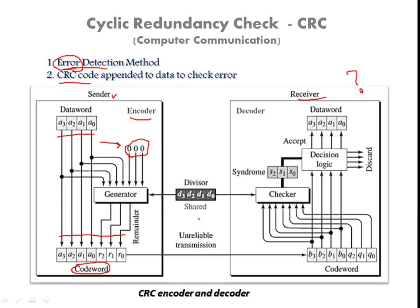This code word is then decoded at the receiver side. Here also we perform another division process using the same CRC code. One common CRC code is shared between both sender and receiver. Both have knowledge of that code and use it to check whether the data is properly received or not.